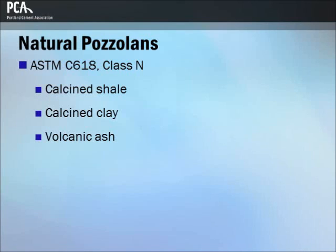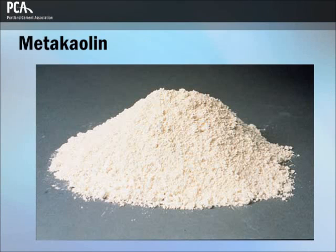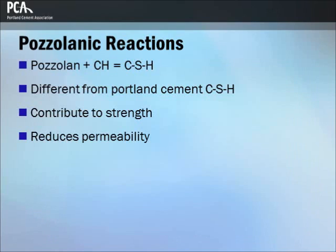Natural pozzolans are produced from natural mineral deposits. Some of these materials require heat treatment known as calcining to make them pozzolanic, while others such as volcanic ash can be used with only minimal processing. Natural pozzolans are classified by ASTM C618 as class N pozzolans. Calcined shale is shown on the left and calcined clay on the right. Metakaolin is a calcined clay that is produced by low-temperature calcination of kaolinite clay.